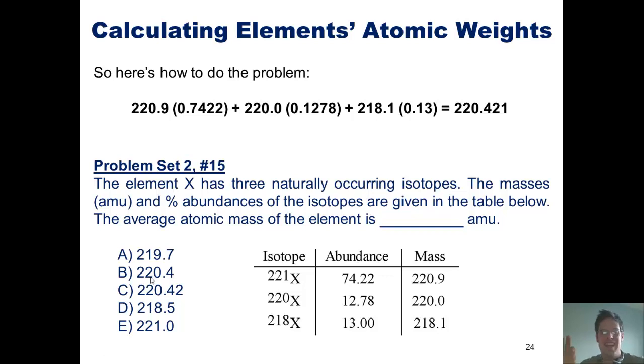So, this is how, if we are given the different atomic masses of different isotopes and their percentage of abundance, we can calculate the overall atomic weight of that particular element.